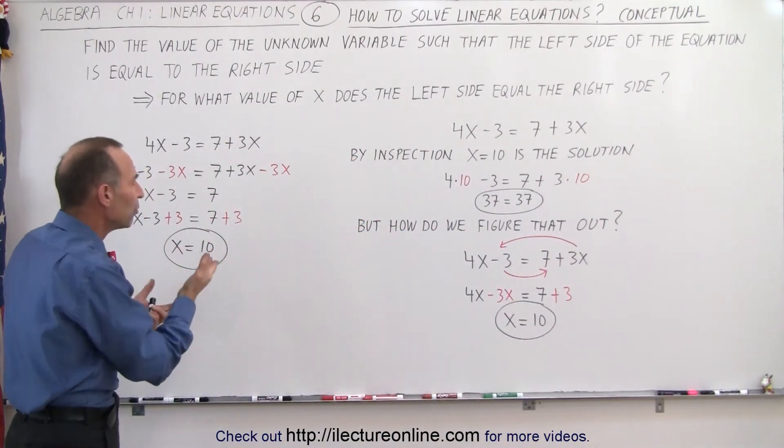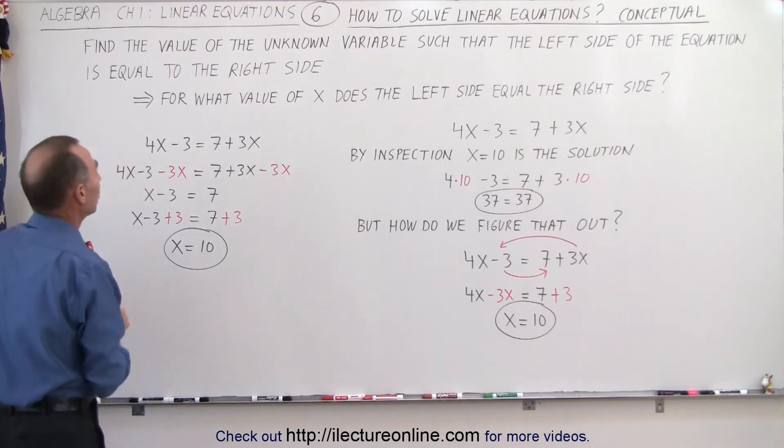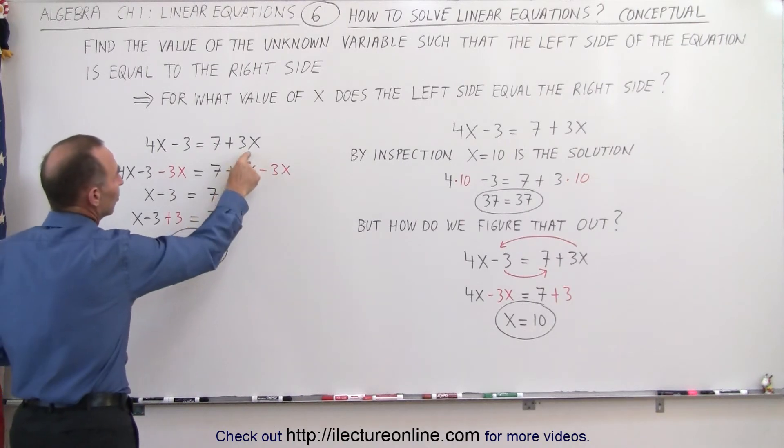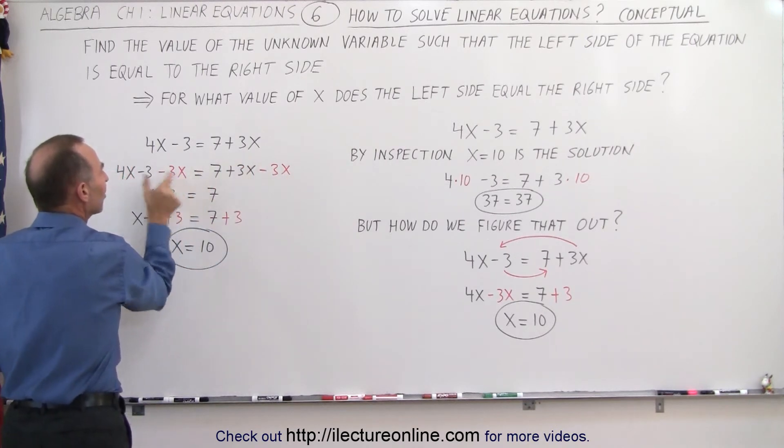If we're going to solve that same equation using the property of addition and subtraction, this is what it would look like. First of all, we have a 3x on the right side. We can get rid of that by subtracting the 3x on the right side, but then we have to do exactly the same on the left side.